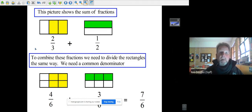The first question is adding two-thirds plus one-half. This picture shows two-thirds of a rectangle - we break the rectangle into three parts, and two parts are shaded. The green section represents one-half of the whole rectangle.